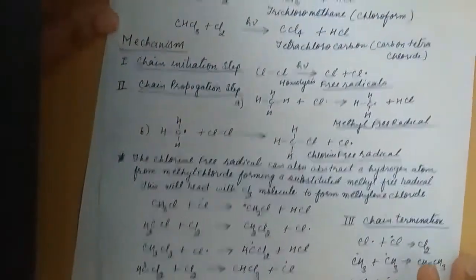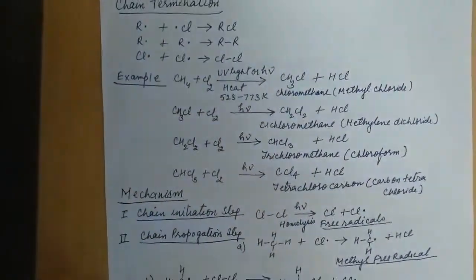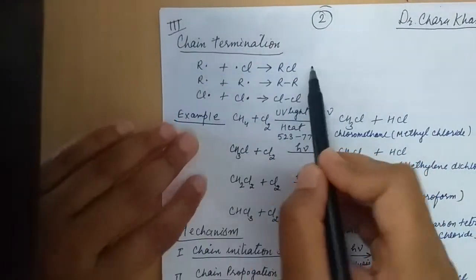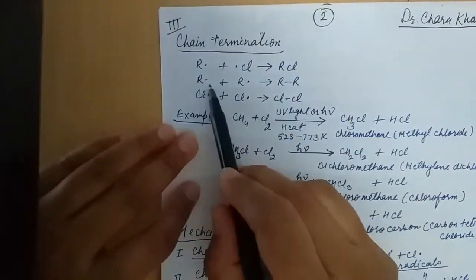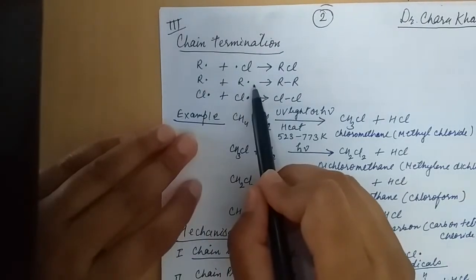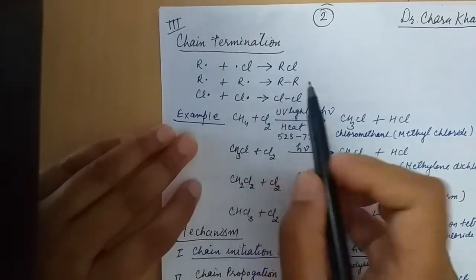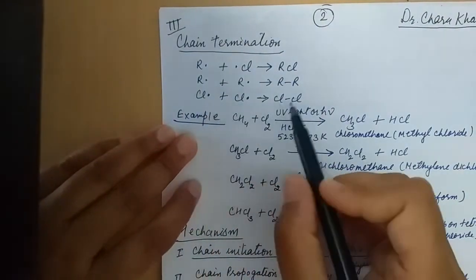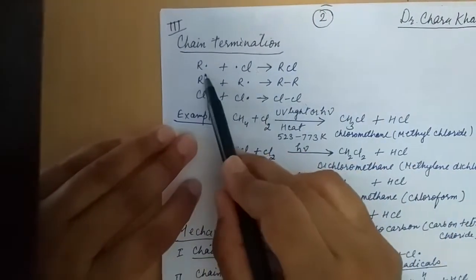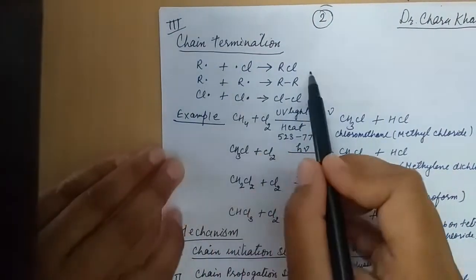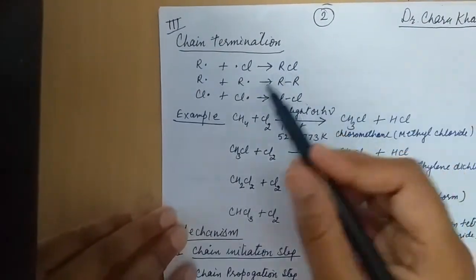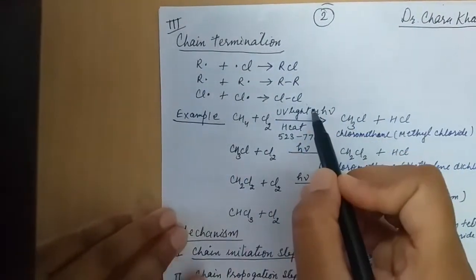The next step is chain termination. In chain termination, free radicals combine: two R free radicals combine to form an alkane (R–R), two chlorine free radicals combine to form a chlorine molecule (Cl₂), and R• and Cl• combine to form RCl. All the free radicals are consumed, and product formation is complete.